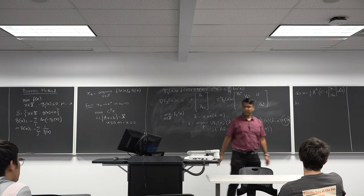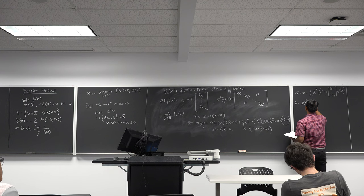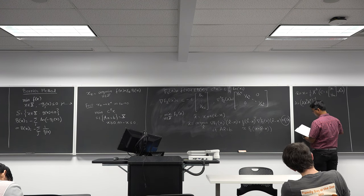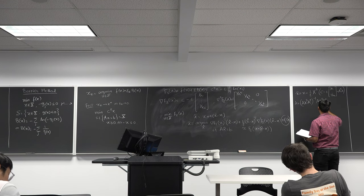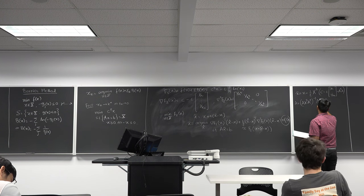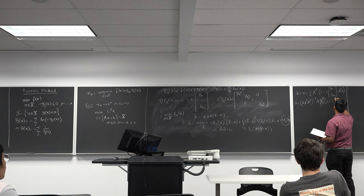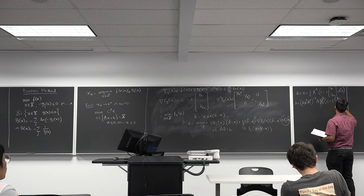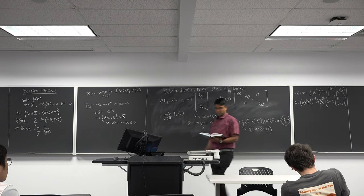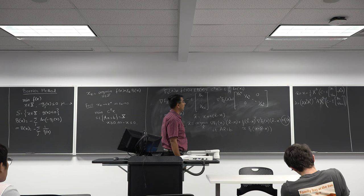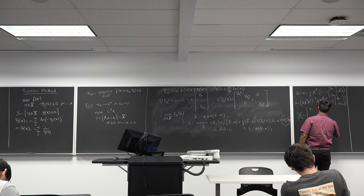Lambda is given by (A X_squared A transpose) inverse times (A X_squared C minus something), where capital X is the diagonal matrix with entries x_1 through x_n on the diagonal.